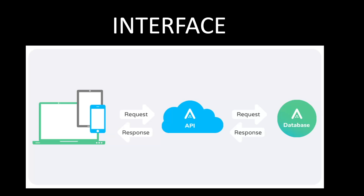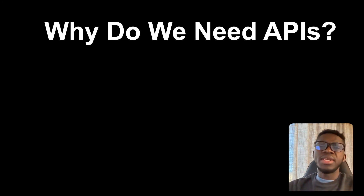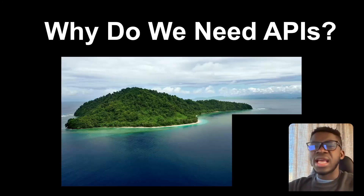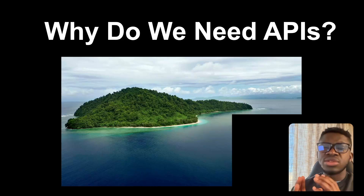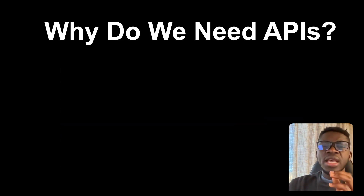In simple terms, an API is a way for applications or systems to communicate with each other — just like having a universal translator between two different pieces of software. Without APIs, our software would look like isolated islands, unable to share data or work together. APIs connect these isolated islands and let our applications and systems work seamlessly together.